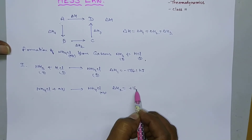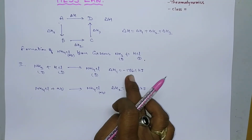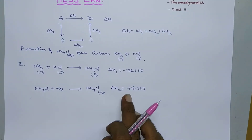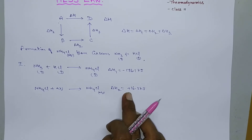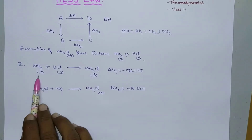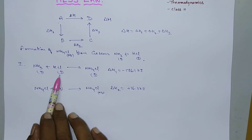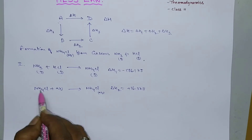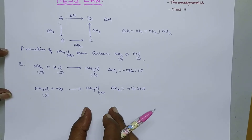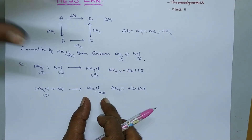Next, this gaseous ammonium chloride reacts with aqueous media to produce aqueous ammonium chloride, where delta H2 equals minus 16.3 kilojoules. Delta H1 is minus 176.1 kilojoules — an exothermic process — while delta H2 is positive 16.3 kilojoules, indicating an endothermic process. So in this first pathway, gaseous ammonia combines with gaseous HCl to give gaseous ammonium chloride, which then dissolves to give aqueous ammonium chloride.